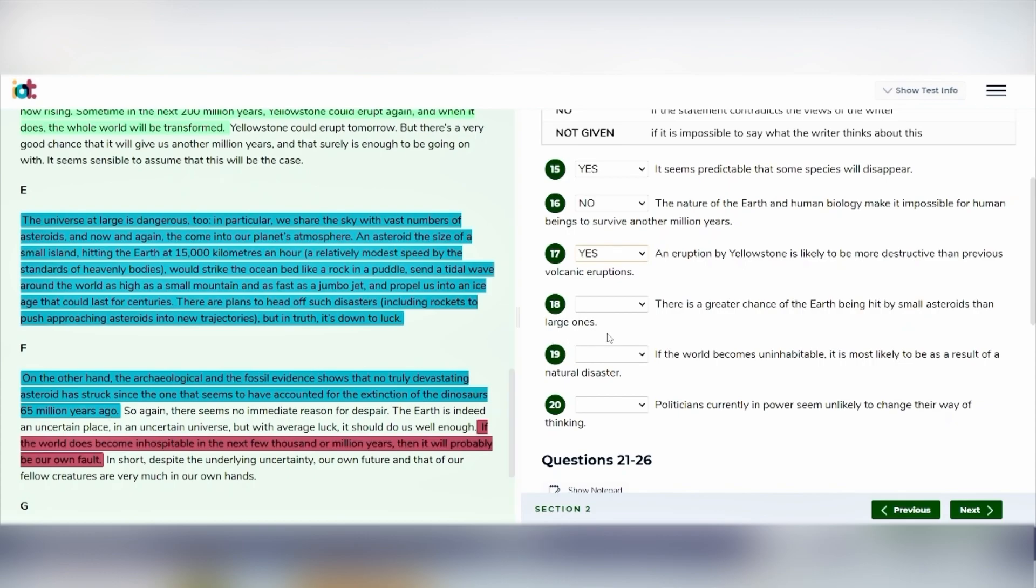Let's go back to our question, which says, There is a greater chance of the Earth being hit by small asteroids than large ones. I have already read everything that is written in the passage related to the asteroids. And you can see that there is not a single statement in the entire passage which agrees to the statement made in question 18 or which negates the statement made in question 18. So we can say that this statement is not given in the passage. There is a lot mentioned about asteroids in the passage, but this particular statement is not made. So we will say that this is a not given statement.